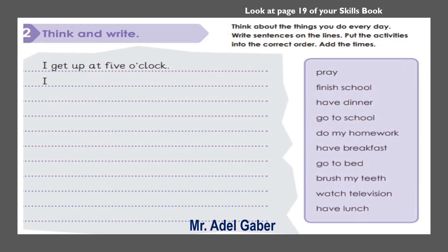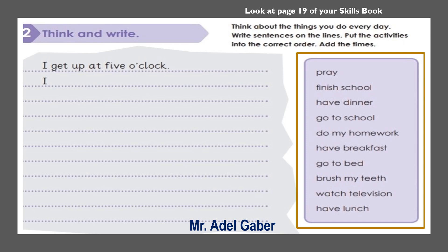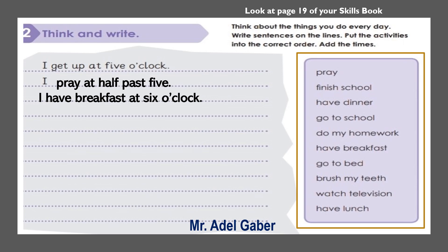Look at page 19 of your skills book, activity 2, think and write. Read the phrases in the box on the right. Think about your own life and write 10 sentences in the order in which you do the activities, at the time you do each activity. For example: I get up at 5 o'clock. I pray at half past 5. I have breakfast at 6 o'clock. Write your completed sentences on the writing lines in your skills book.